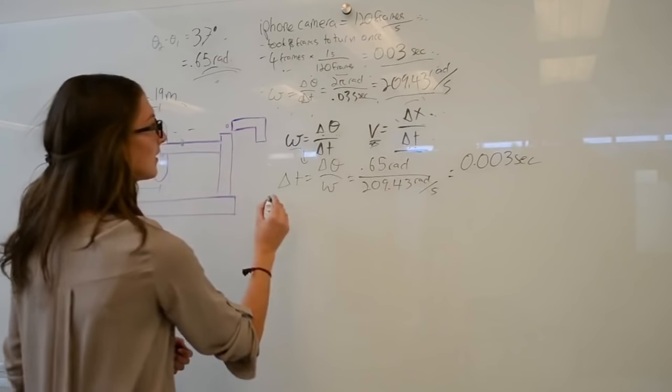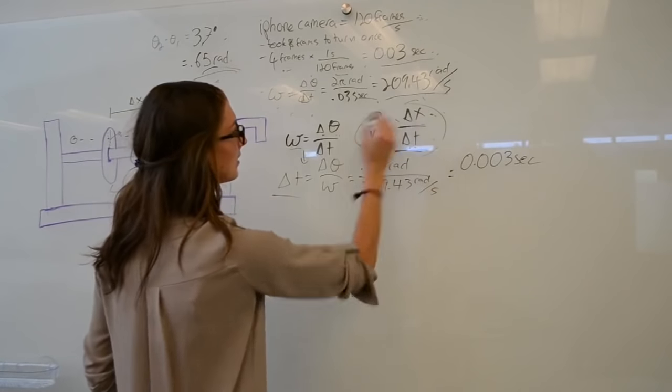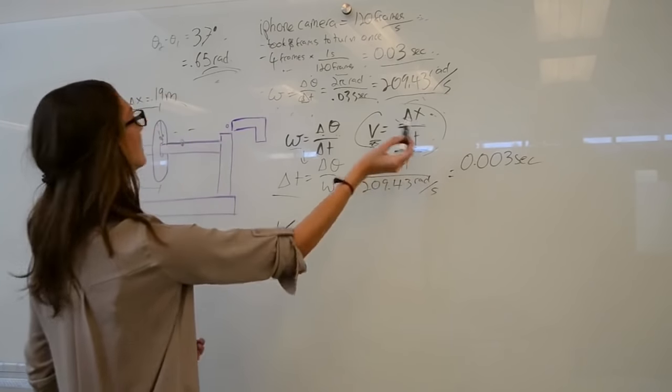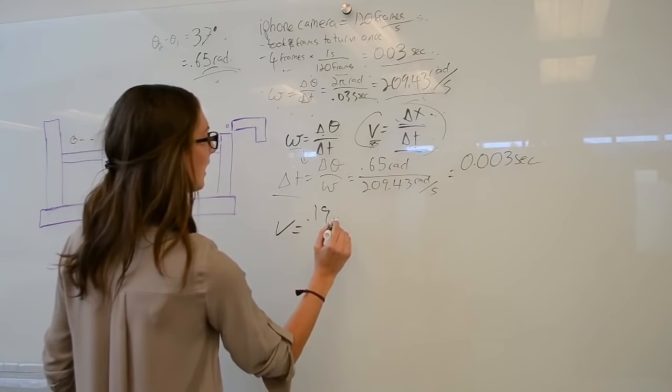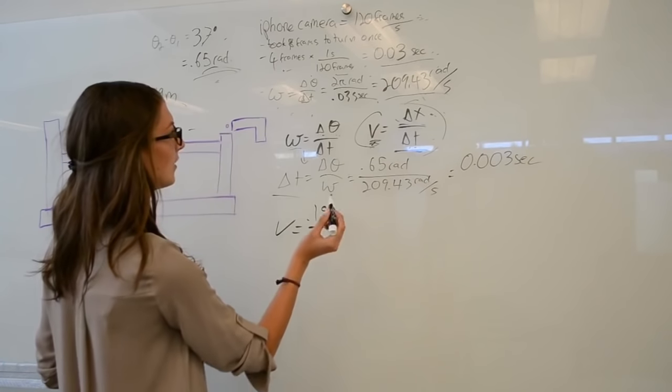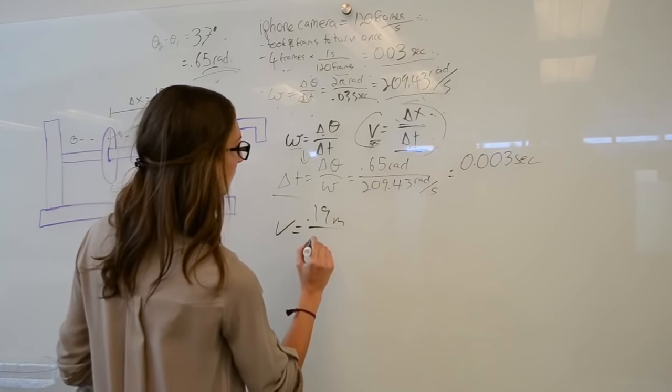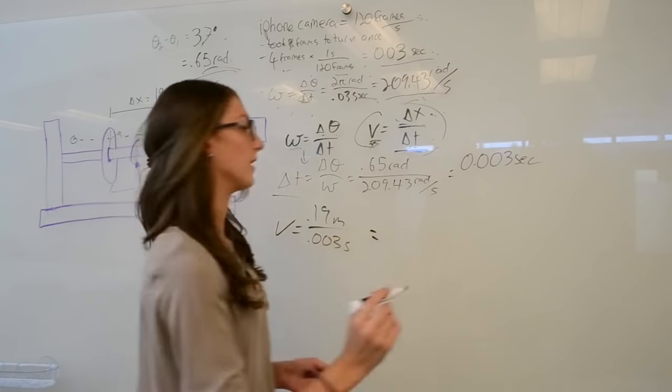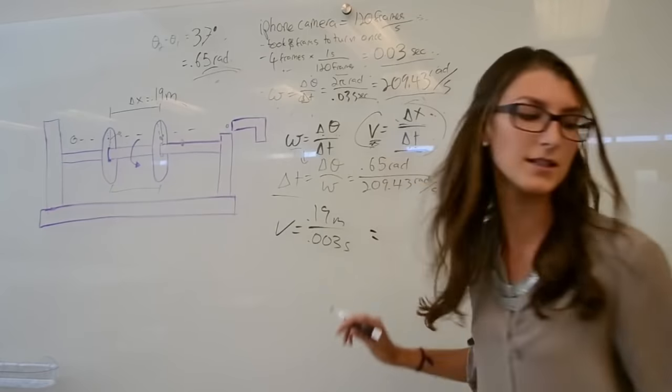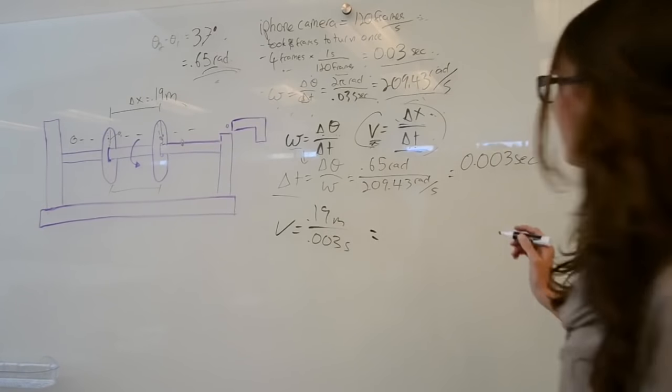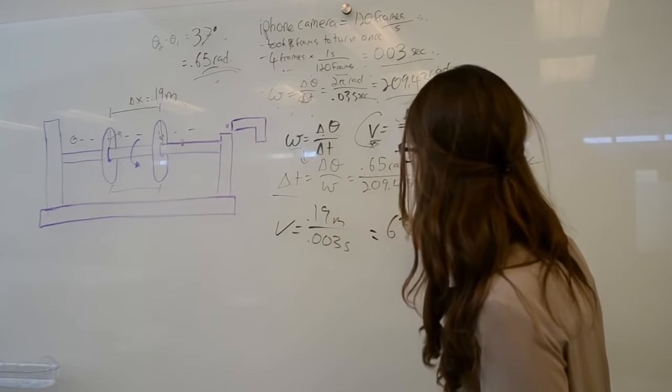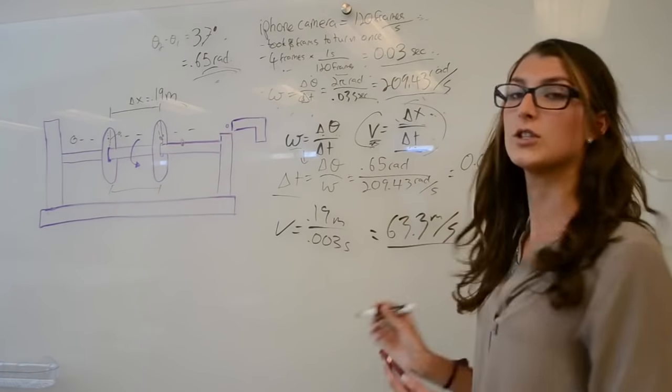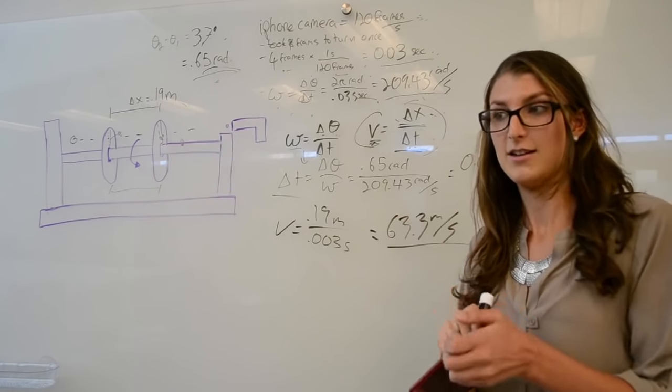Then we can plug that t back into this velocity equation. We know that velocity is equal to 0.19 meters divided by 0.003 seconds, which turns out to be about 63.3 meters per second. Which is pretty similar to our other velocity. So we're happy.